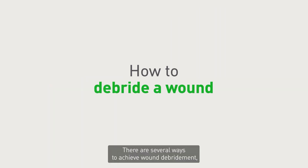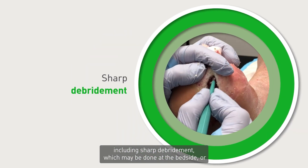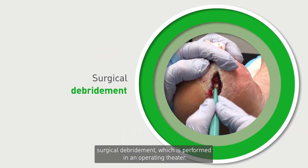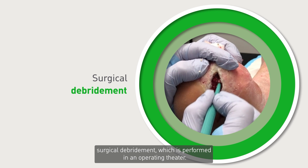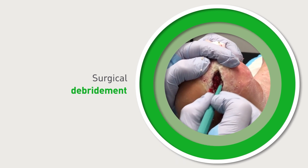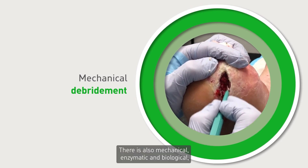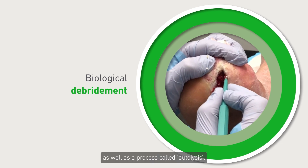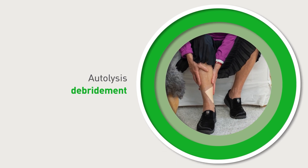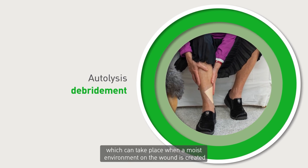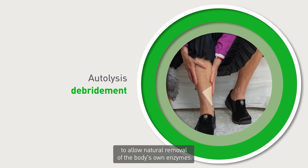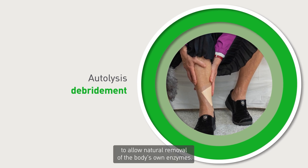There are several ways to achieve wound debridement, including sharp debridement which may be done at the bedside, or surgical debridement which is performed in an operating theatre. There is also mechanical, enzymatic and biological debridement, as well as a process called autolysis, which can take place when a moist environment on the wound is created to allow natural removal of the body's own enzymes.